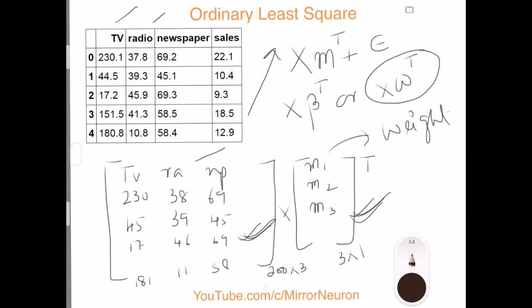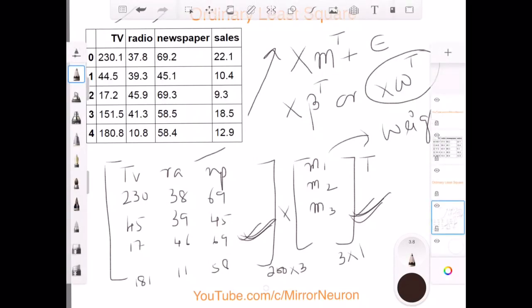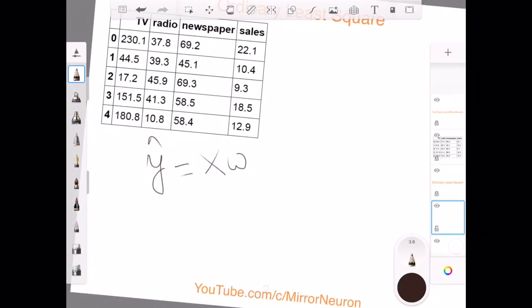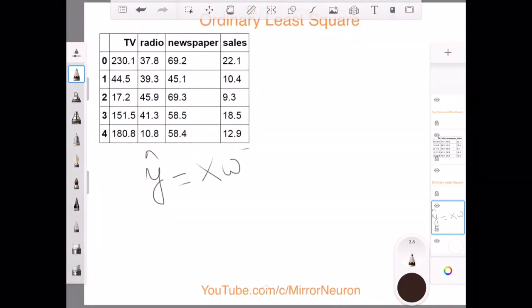Alright, so once this is done, that means my expression y is equal to—the predicted value should be my feature vectors multiplied with my omega transpose plus some error vector.